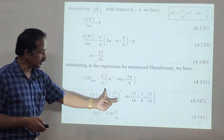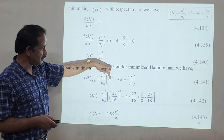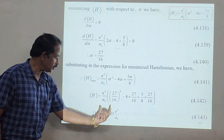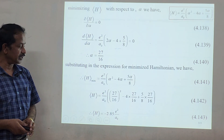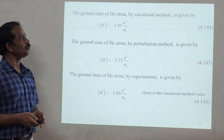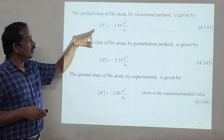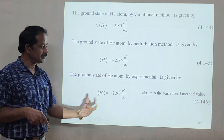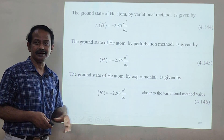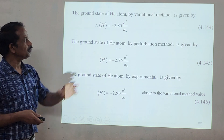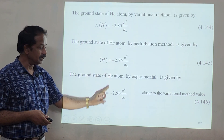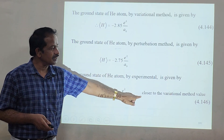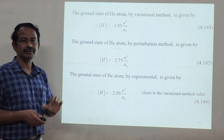Substituting alpha = 27/16 into the Hamiltonian expression — (27/16)² − 4(27/16) + (5/8)(27/16) — and simplifying gives H = −2.85 e²/a0 from the variational method. The perturbation method gives −2.75 e²/a0, and the experimental value is −2.90 e²/a0. The variational result of −2.85 is much closer to the experimental value, showing that the variational method is better than the perturbation method.